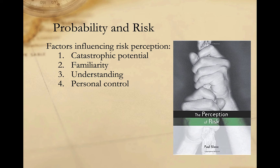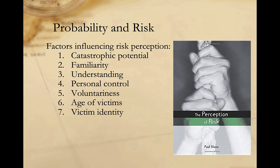We tend to view things that are not under our control as riskier than those perceived to be under our control — think of being the driver of a car versus a passenger on an airplane. The degree of voluntariness affects our perception of risk; we tend to be more willing to accept risk if we choose to participate, as with scuba diving, rock climbing, or parachuting. The age of victims influences risk perception — risks that threaten children are viewed as more dangerous than those that threaten adults. Victim identity also matters: incidents affecting higher-profile or known individuals are more powerful than those affecting large numbers of unknown people. Finally, the origin of the risk influences our perception — risks created through human activity tend to be viewed as more dangerous than those occurring naturally.